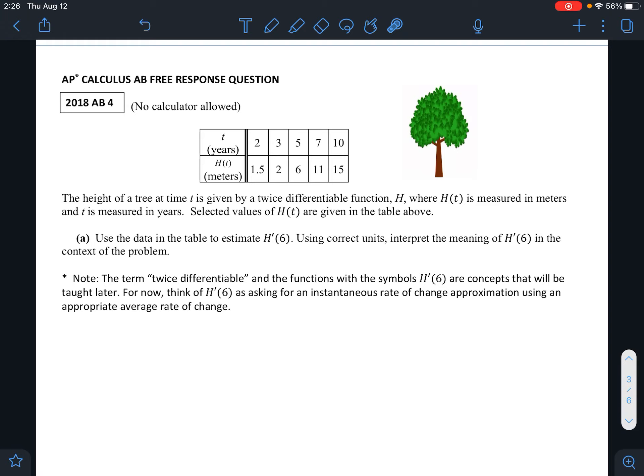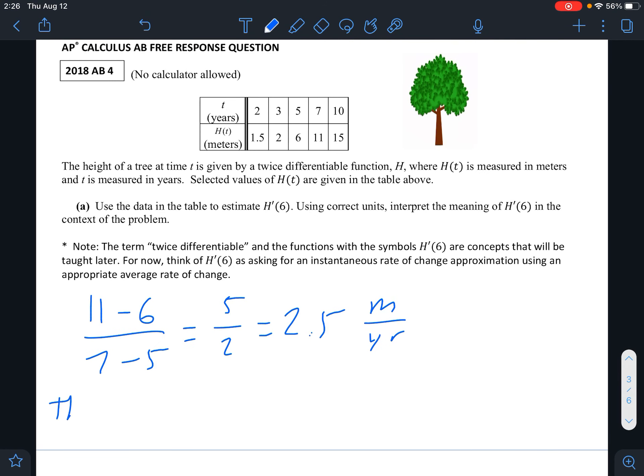Since we're looking at 6, we want to look between 6. So all this question is really asking you to do is find the slope around 6, the average rate of change around 6. And that would be 11 minus 6 over 7 minus 5, if I'm using these two points right here. So the points would be (5, 6) and (7, 11). And that would give us 5 over 2, or 2.5 meters per year. So we would say here that the tree was growing at a rate of 2.5 meters per year when the tree was 6 years old.